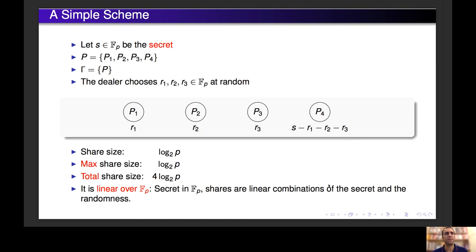In some schemes, the size of the shares may differ for different participants, so in general we consider the max share size — in this case it's still log p. We will also consider the total share size, which is the sum of the share sizes, that is 4 log p in this case. This scheme is linear over F_p, which means the secret is in F_p and shares are linear combinations of the secret and the randomness. Linear schemes have homomorphic properties that are useful in cryptography, and so this is a special family of schemes that will also be considered during the talk.